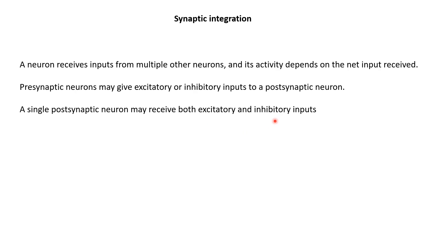Inputs can also vary in terms of their magnitude because different synapses can have different strengths. They can also come at different locations on the dendrites relative to the cell body, and they may also come at different time points. So how are these variable inputs combined together? This is what we will understand as we go along.